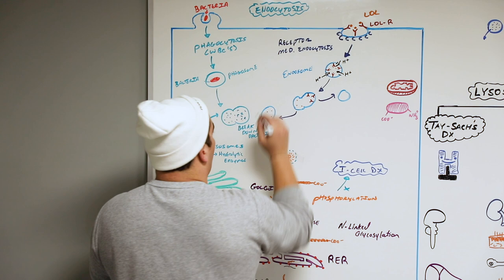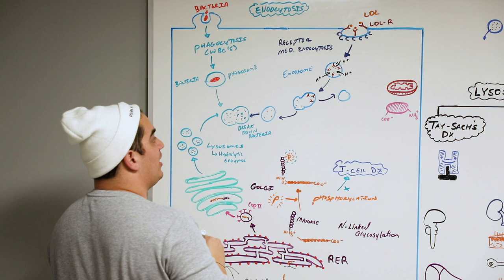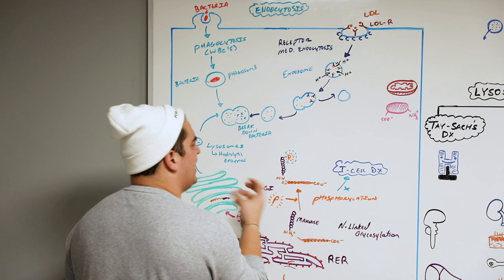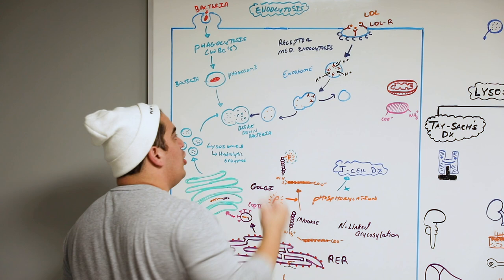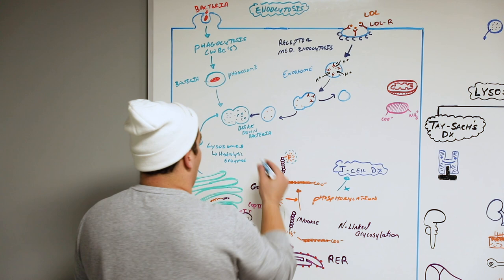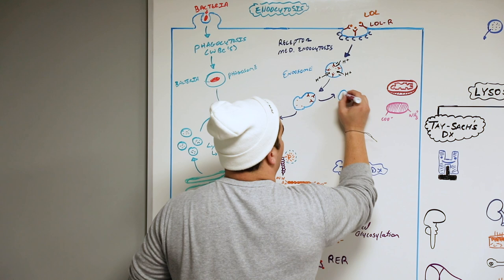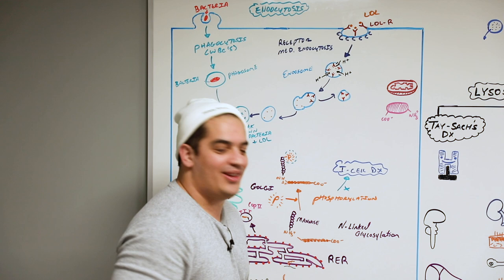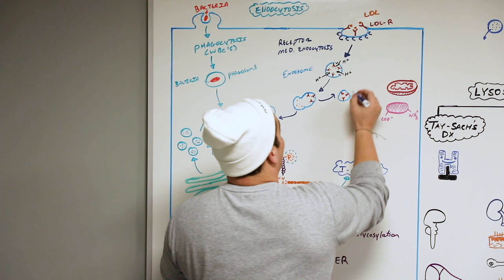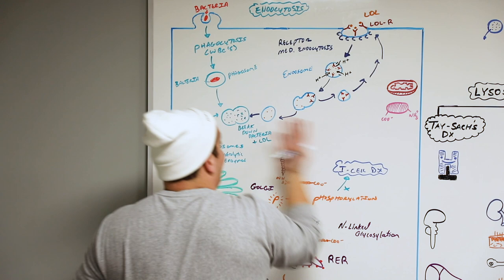The LDL molecules get sent to the lysosome, where specific lipases, sphingomyelinases, and other enzymes break down the cholesterol, phospholipids, and proteins within the LDL molecule. The LDL receptors, on the other hand, get recycled and sent back to the cell membrane to re-express the LDL receptors so that the next LDL can bind and repeat this same process.